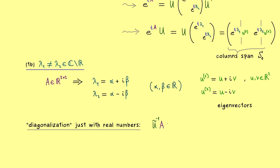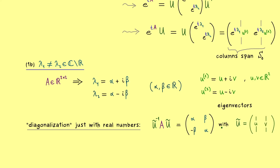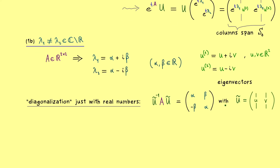We use an invertible matrix called U-tilde, which transforms A into a matrix that only has alpha and beta as entries. Specifically, we have the real part alpha on the diagonal and the imaginary part beta off-diagonal. The matrix U-tilde uses only the real and imaginary parts of the eigenvectors — u in the first column and v in the second column. One can verify that everything works, and the essential result is that we can write it all down using only real numbers.